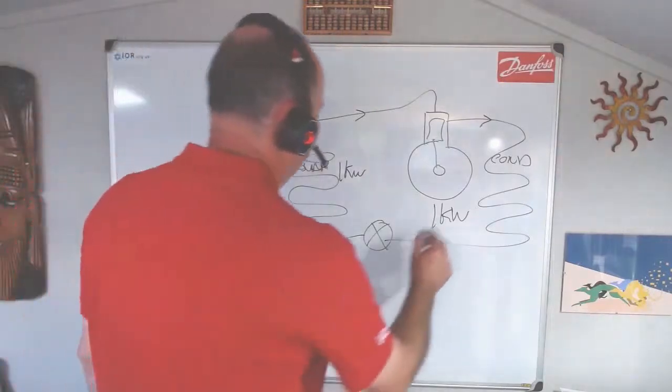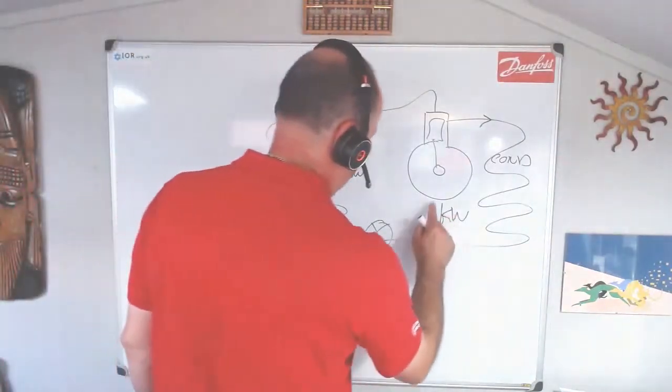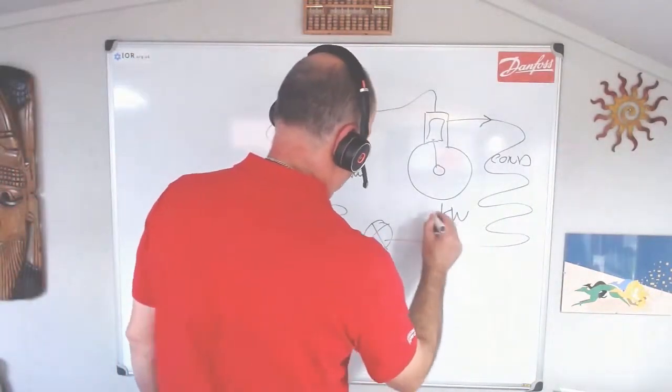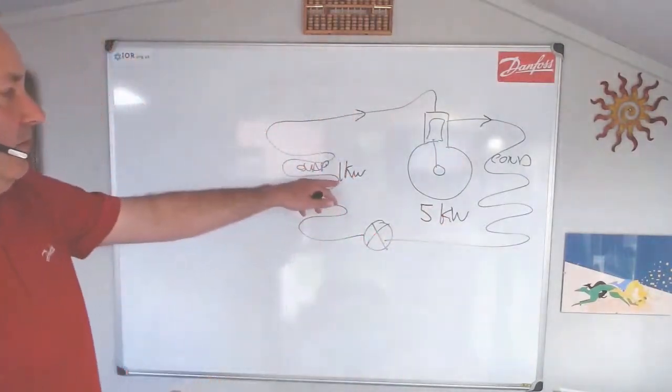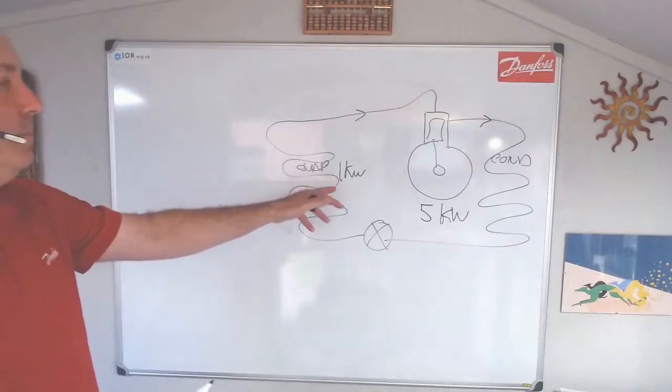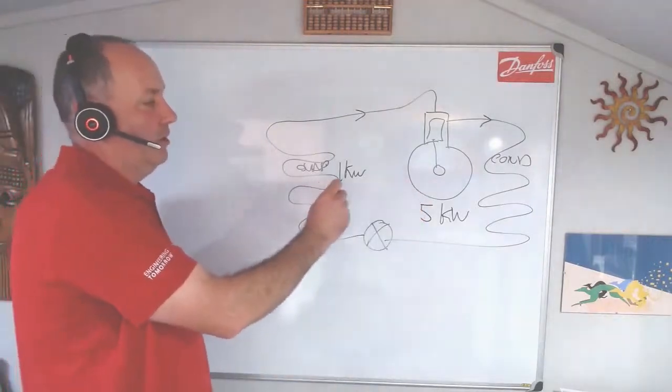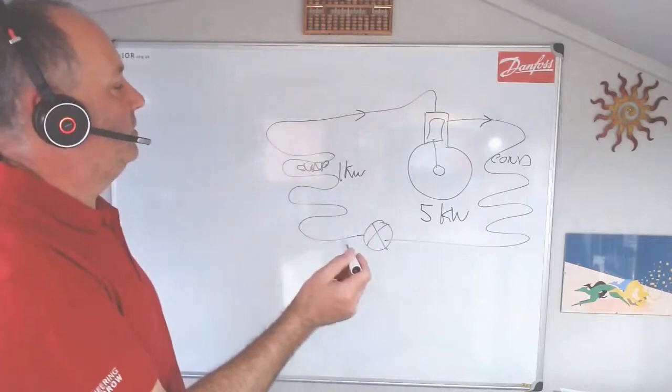The challenge is, if this is—let's say five kilowatt—and our evaporator is only one kilowatt, then that's too big for that. So we're not going to evaporate at the right temperature.